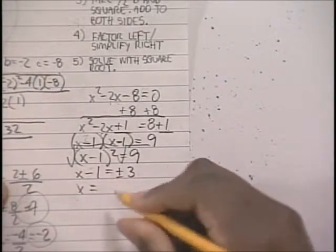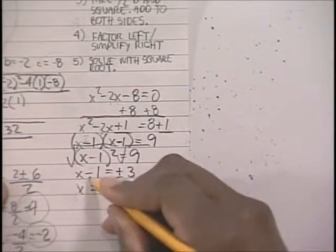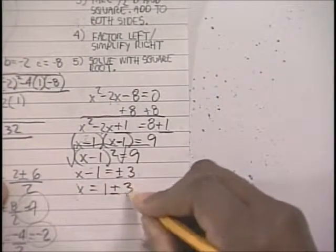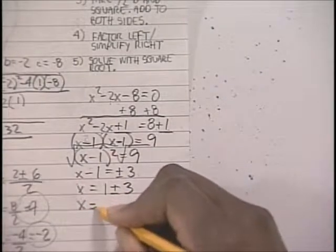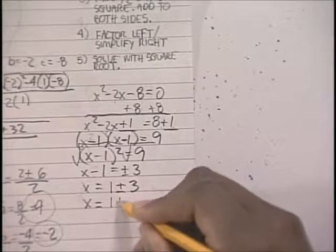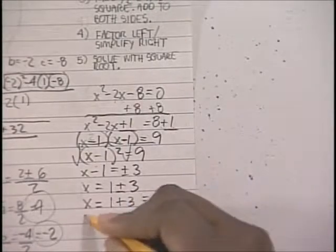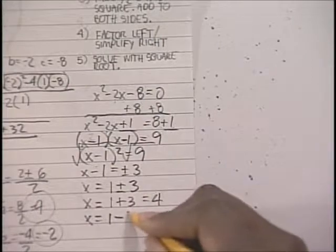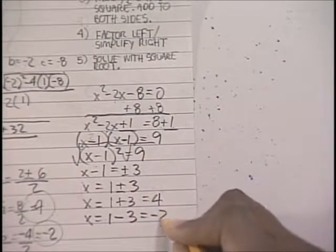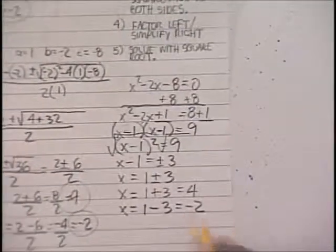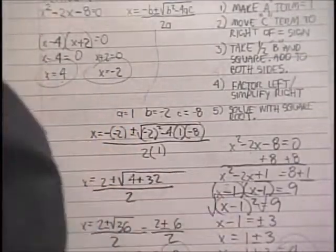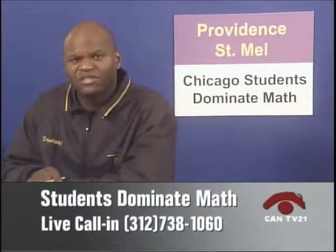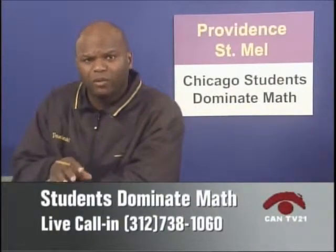So you end up with x equals 1 plus or minus 3—I'm adding 1 to both sides. One answer is 1 plus 3, which is 4. The other answer is 1 minus 3, which is negative 2. So notice how we get 4, negative 2 three different ways. We want our students to be able to solve the same problem in more than one way.